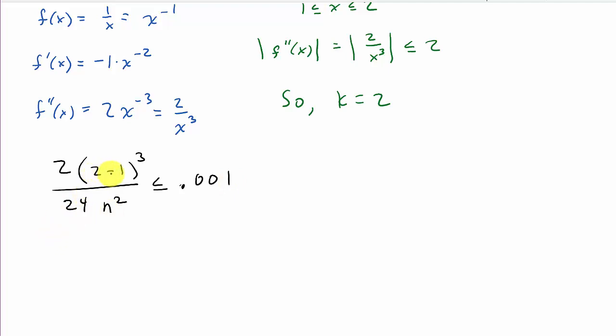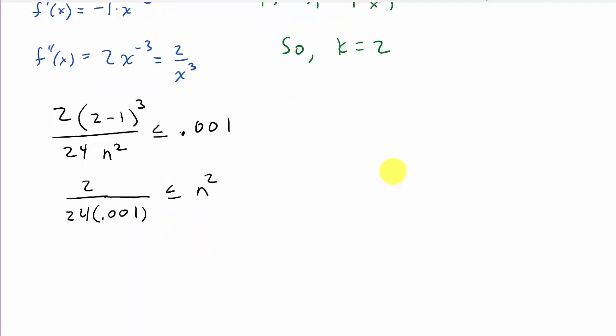Alright? So, this is 1 here. That's 1 cubed is 1. So, 2 times 1. That's 2 over 24 times 0.001 less than or equal to n squared. So, I just move this down to the denominator, and the n squared gets moved over here.